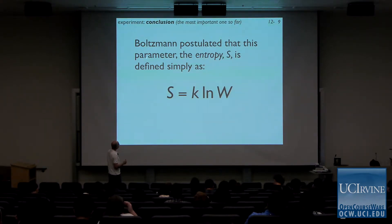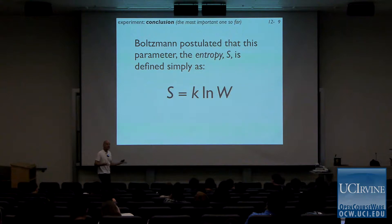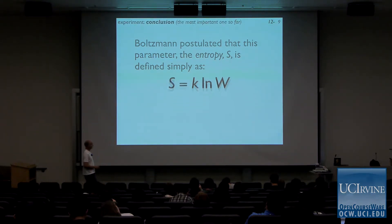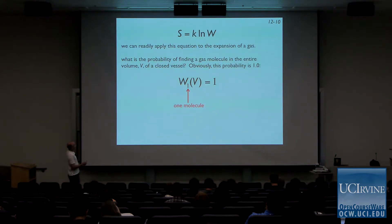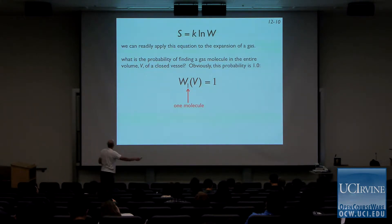Boltzmann postulated that entropy S is defined by the equation S = k log W. This is really a postulate — it is the statistical definition of entropy. We are also going to talk about the thermodynamic definition. We can already apply the statistical definition to the expansion of a gas, and we're going to try to tie together statistical entropy and thermodynamic entropy.